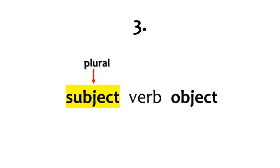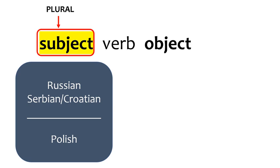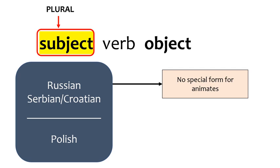At this point you may be wondering about subjects. The ensuing discussion applies only to plural subjects. The generalization is straightforward: while Russian and Serbian-Croatian do not have a special form for marking their nominative plurals, Polish does. Once again, plural entities that include a human male are in the privileged position.